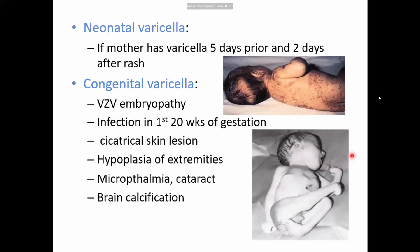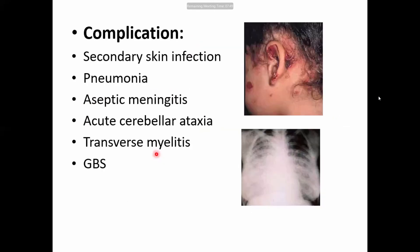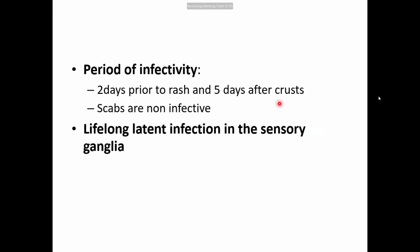Two special forms to know: neonatal varicella and congenital varicella. The infectious period is two days prior to rash onset and five days after crust formation. The child must be isolated and cannot be sent to school until five days after crust formation. Even before the rash appears, the child is already infective, so contacts must be quarantined.